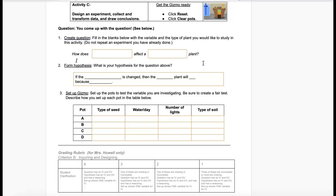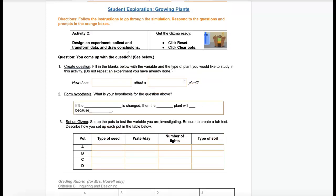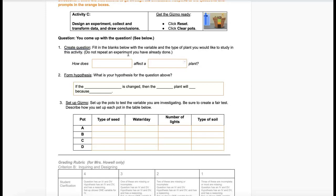With this one you have, how does blank affect blank? Looking at the Growing Plants Gizmo, there are several independent variables that you can choose from.